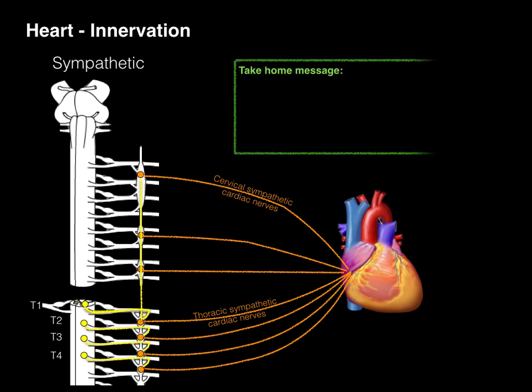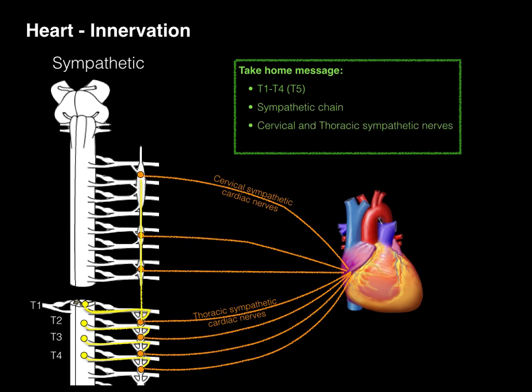The take-home message is: sympathetics arise between the T1 to T4 levels, the sympathetic chain is where the synapse occurs, and then the cervical and thoracic sympathetic cardiac nerves course out to innervate the heart, which will increase heart rate and contraction.